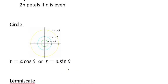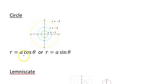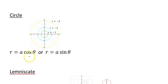The next one is a circle, which we already looked at. It can be generated using r equals a number times the cosine of theta, or r equals a number times the sine of theta. That's the basic equation and that's how it should graph.